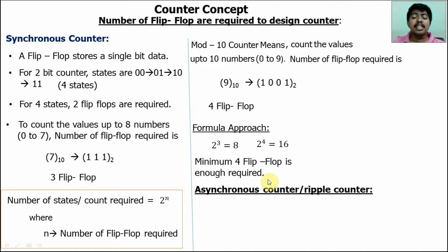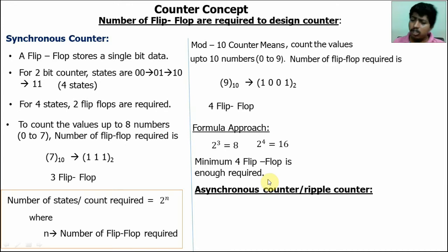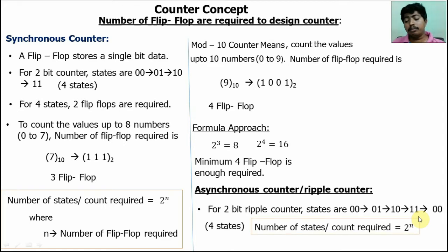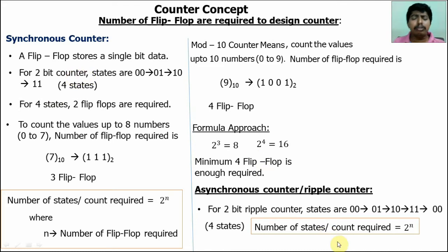Ripple counter — another name for the asynchronous counter. The difference is: in the synchronous counter, all components have the clock applied simultaneously. But in the asynchronous counter, the clock is not simultaneously applied — it is applied at different times. However, the outputs are the same. For a 2-bit ripple counter, states are 00, 01, 10, 11 — four states, requiring two flip-flops. The formula is the same: number of states = 2^n. The only difference is the clock mechanism; the synchronous counter is faster than the asynchronous counter.